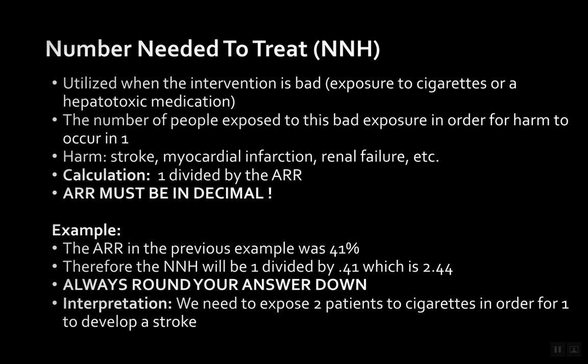Number needed to harm is utilized when the intervention is bad — for example, exposure to cigarettes or a hepatotoxic drug or a drug that causes renal toxicity. It's the number of people exposed to a harmful exposure in order for harm to occur in one person. The calculation is the same: 1 divided by the absolute risk reduction in decimal. Using our ARR of 41%, the number needed to harm is 1 divided by 0.41, which is 2.44.